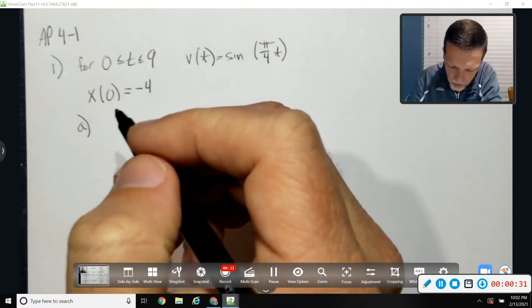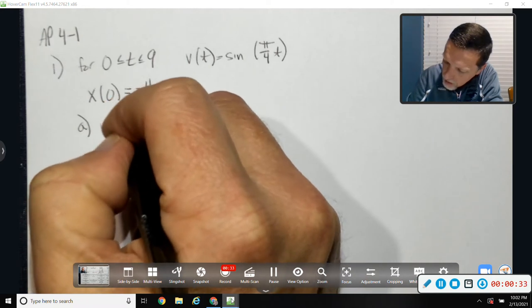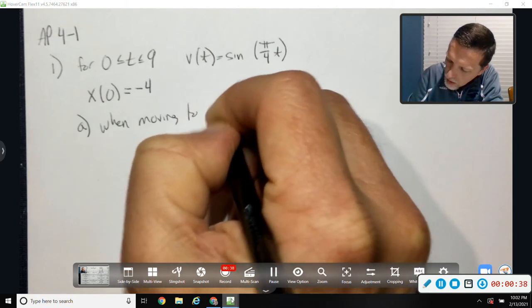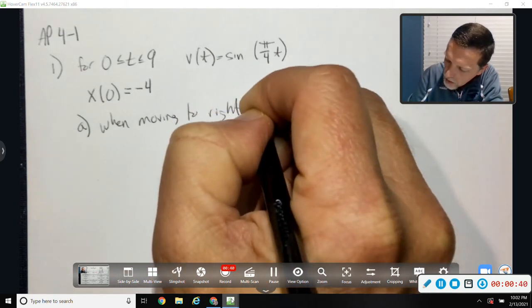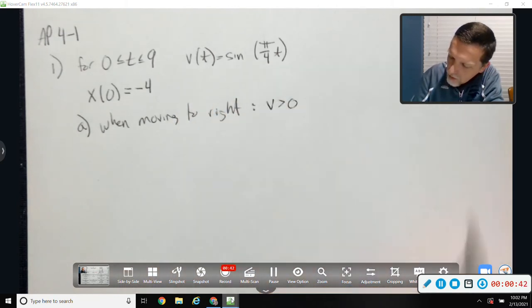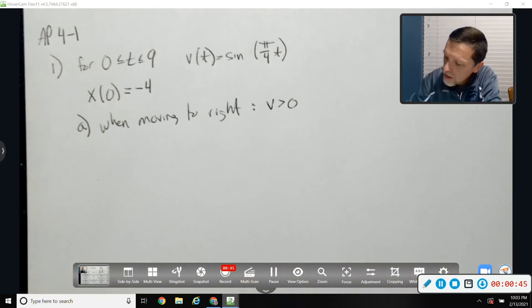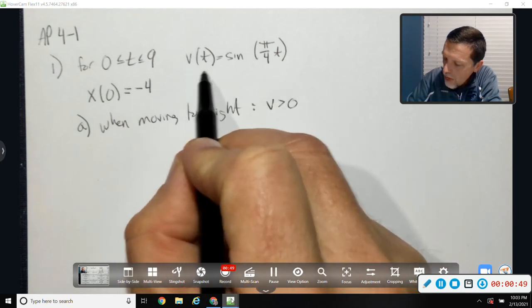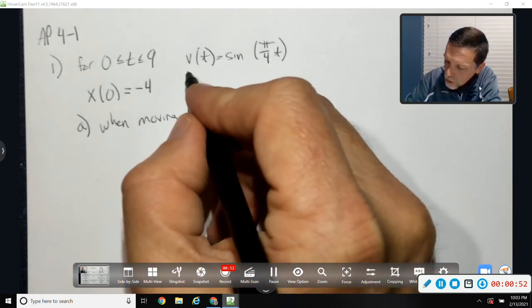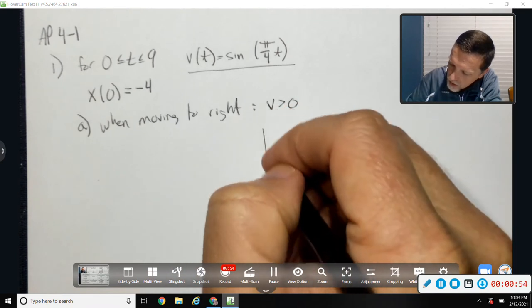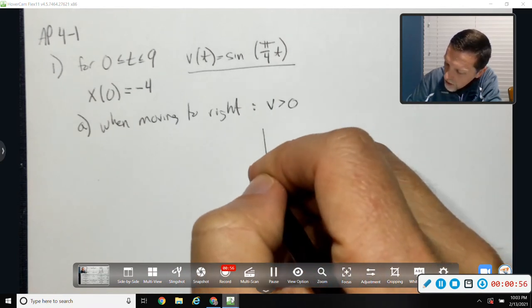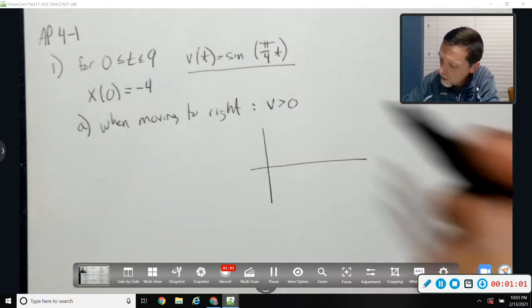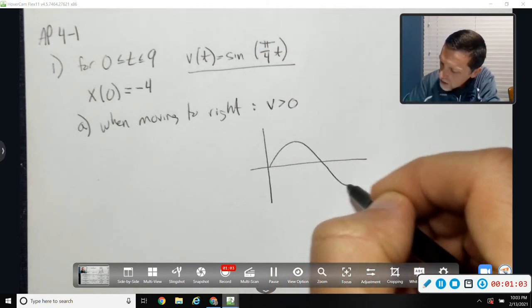Question A. When is the particle moving to the right? Well, that would be when v is greater than zero. Okay, so how do I figure that out? Well, I think in class we did a table of values, but I think maybe a picture would work if you could do a graph of this. I know you're thinking, how do I graph that? Well, I know what the graph of sine looks like, so ignore the rest of that for right now.